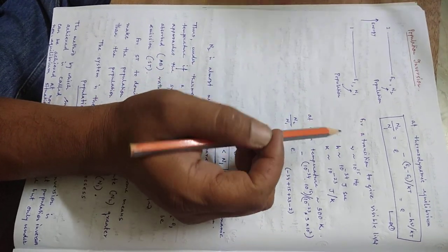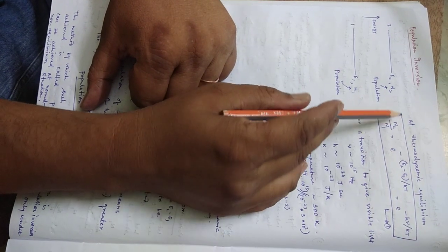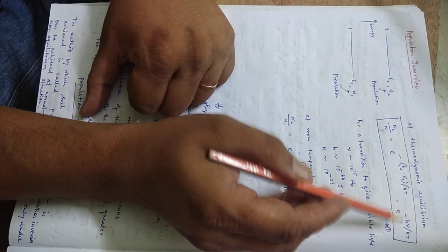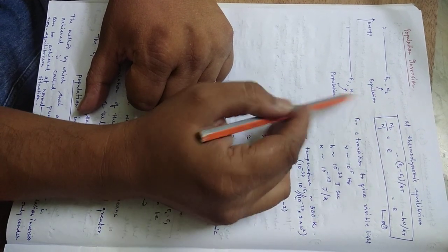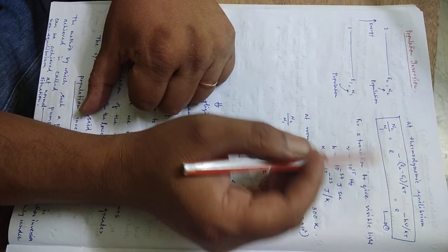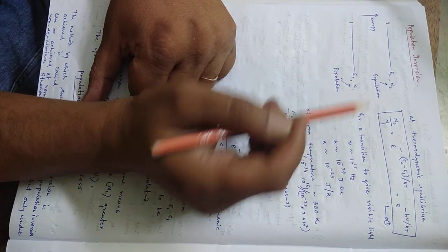So, in the last lecture, we derived, we wrote down this expression N2 by N1. What is N2 and N1? N2 and N1 are the populations of level 2 and level 1 respectively.